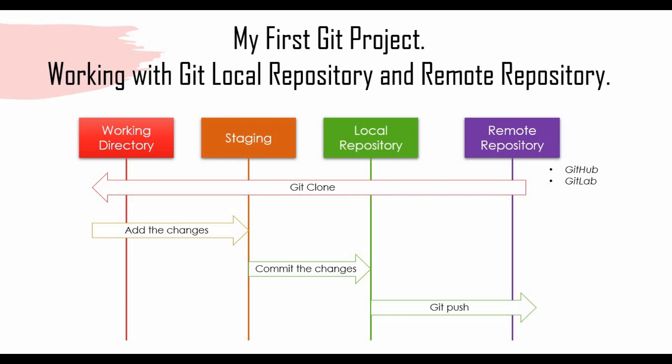In our case the remote repository will be GitHub or GitLab, and we will see how to create a repository there. Once you have the repository in the remote GitHub or GitLab, you can clone those into your local machine — Windows or any machine where you have git installed. You can use git bash or git commands to do that. Once you clone it, that will be called a local repository, and any changes you make will happen in the working directory.